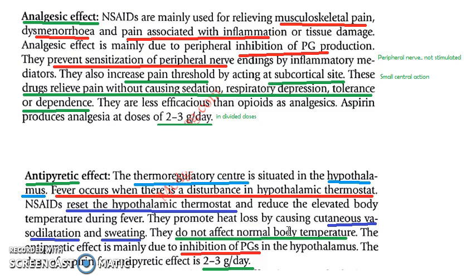Heat loss is promoted by causing vasodilation in the cutaneous blood vessels and by increasing sweating. So NSAIDs promote heat loss through cutaneous vasodilation and sweating. This is achieved through inhibition of prostaglandins in the hypothalamus.